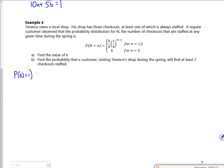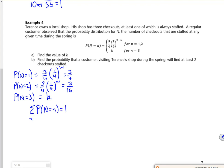For P(n = 1), it's 3/4 times 1/4 to the power of 1 minus 1, which is 0. Anything to the power of 0 is 1, so that's 3/4. For n equals 2, it's 3/4 times 1/4 to the power of 1, so 3/16. And for n = 3, it's just k. Now I know the sum of my probabilities equals 1. So 3/4 plus 3/16 plus k equals 1. So k is 1/16.